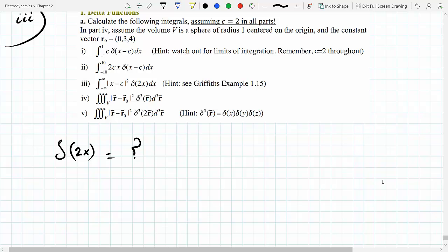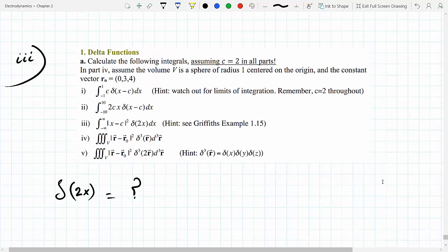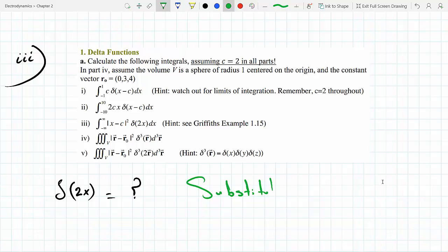For the third one, since you have Delta of 2x, you'd have to do substitution. You're gonna use substitution to relabel that, so I would say let y equal 2x, and then that just becomes Delta of y. But of course, once you do that, you have to use substitution for the entire thing, not just Delta.